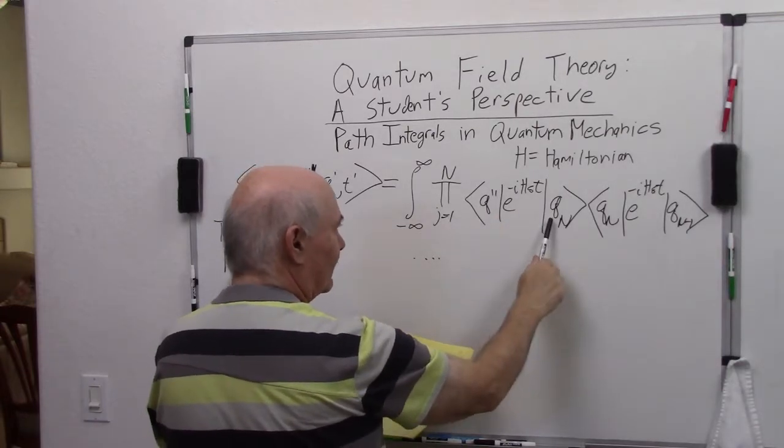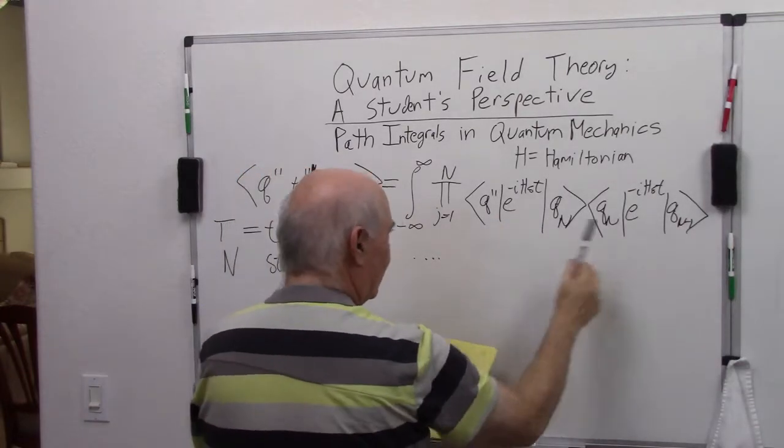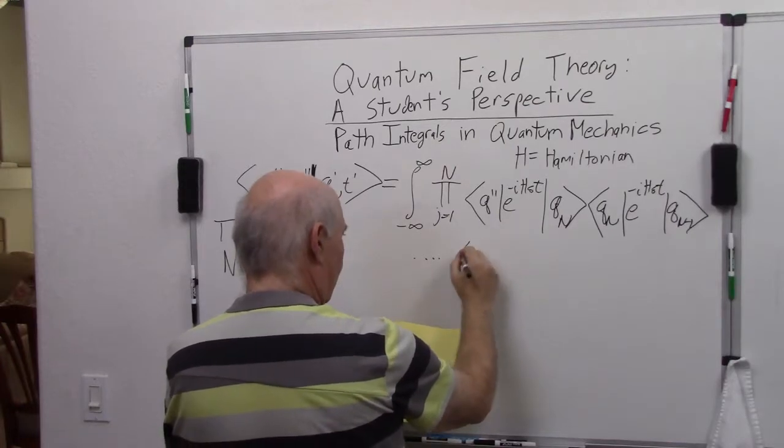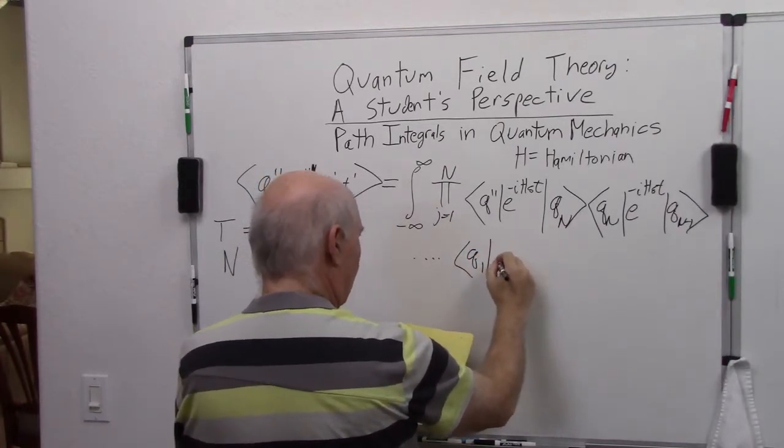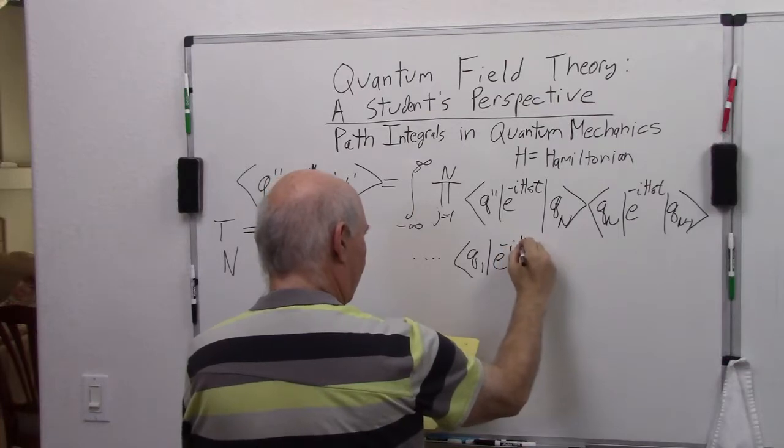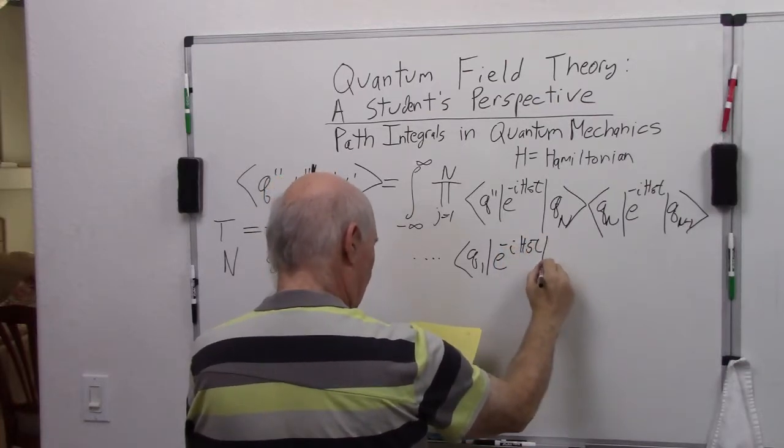Then we're just going to keep doing this. We went from q double prime to q n to q n minus 1, and then we're going to go to q 1, e to the minus i h delta t q prime.